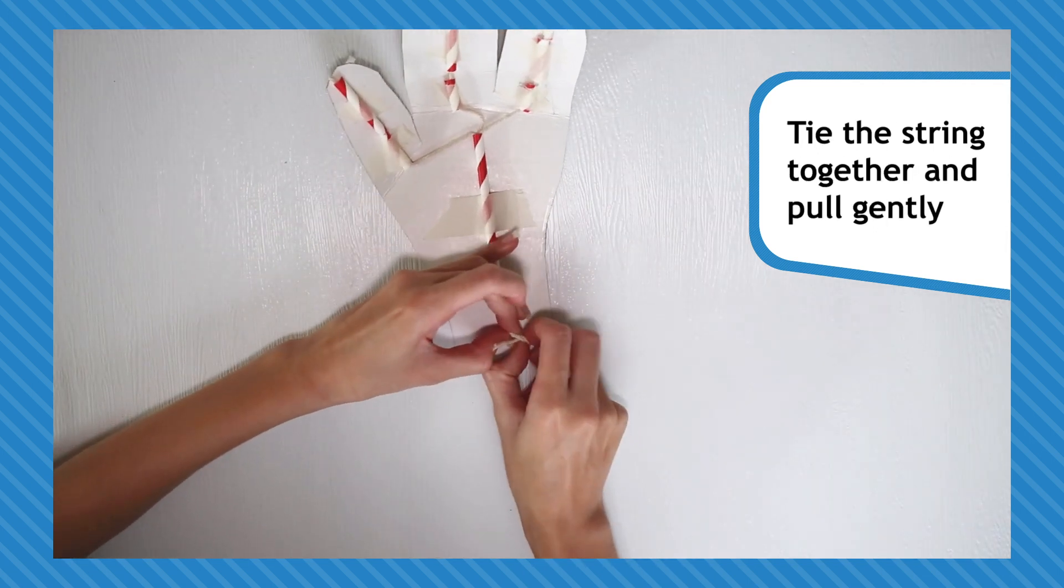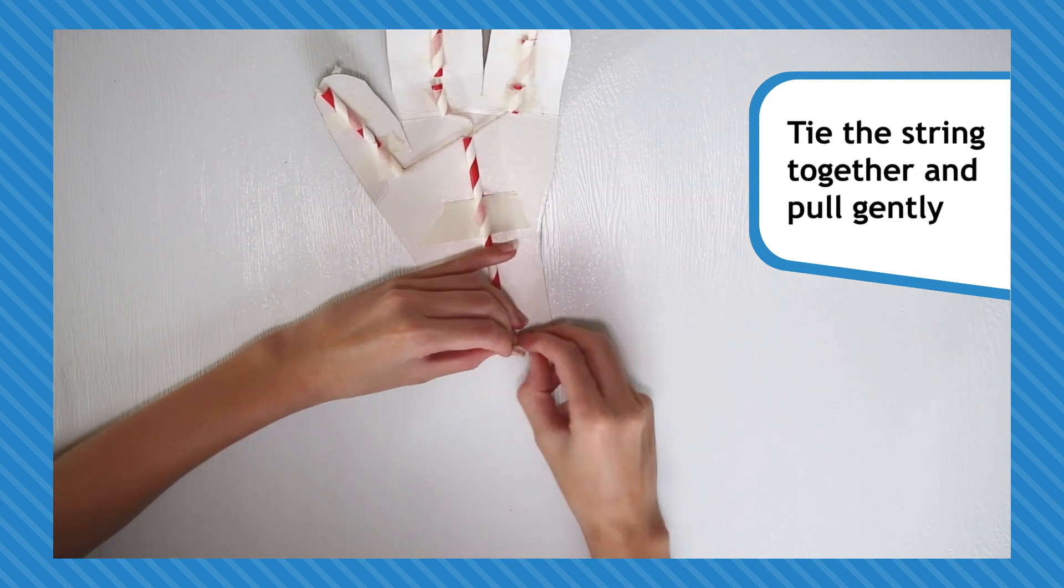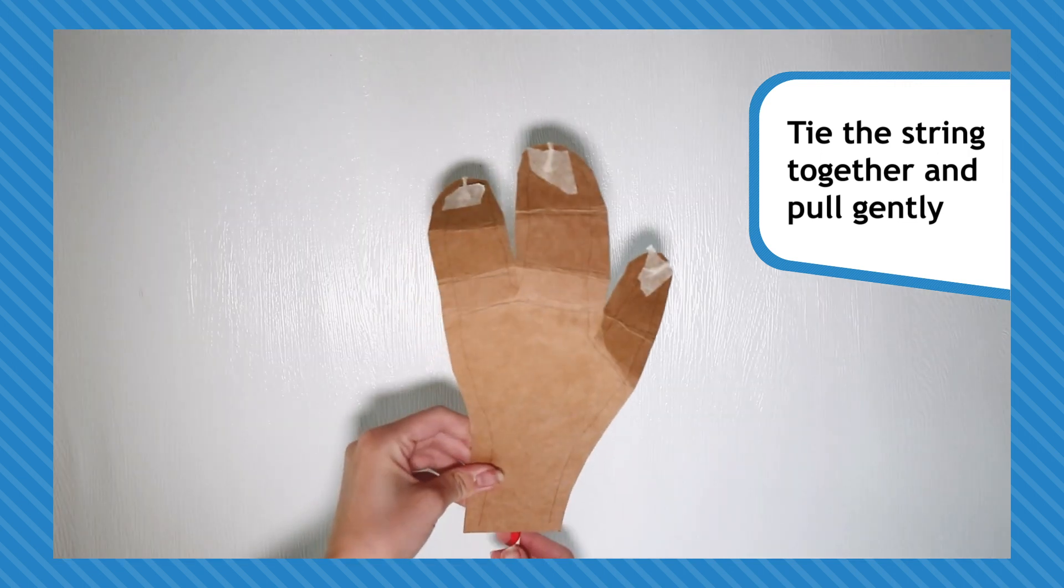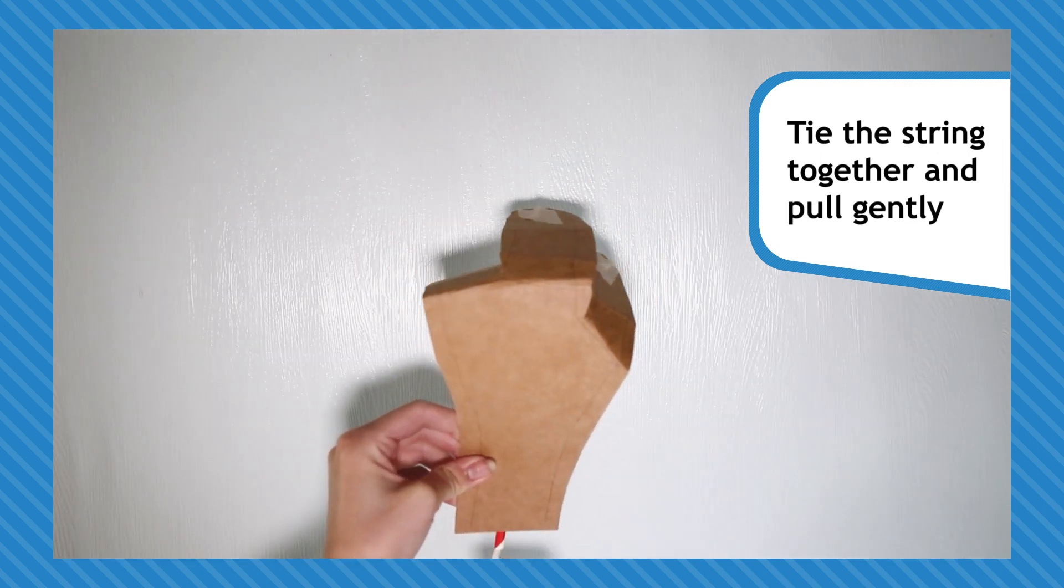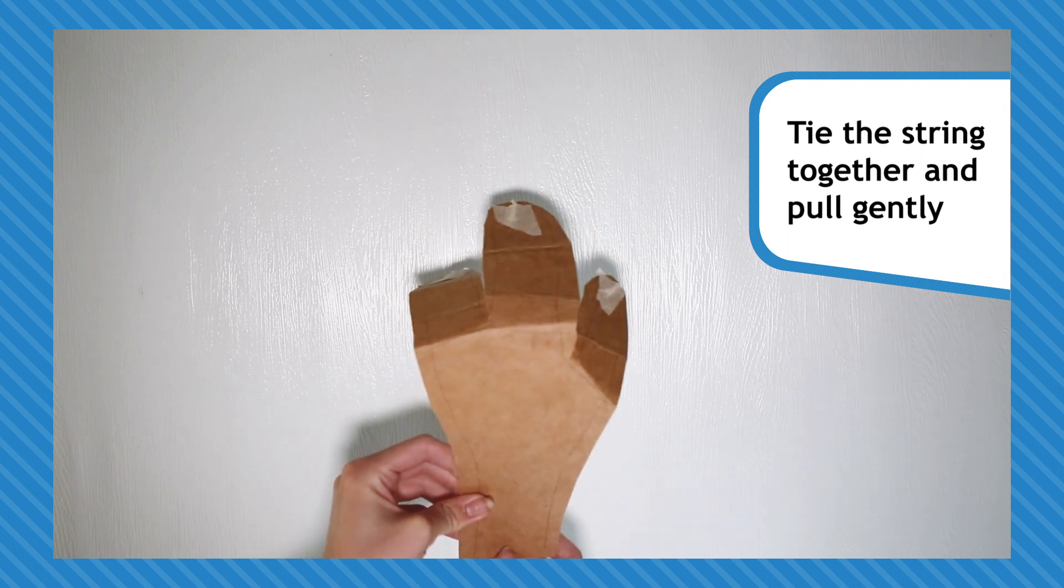Finally, tie all the threads together at the bottom of the wrist. If you gently pull the knot you just made, your fingers should clench. Amazing engineering!